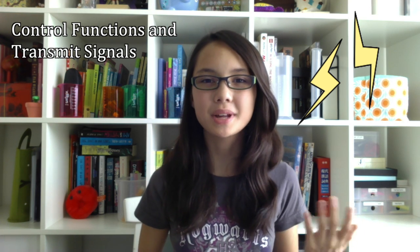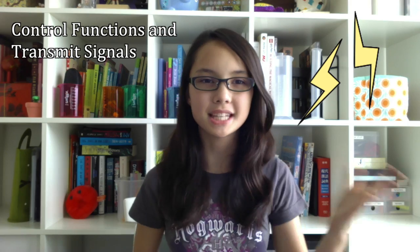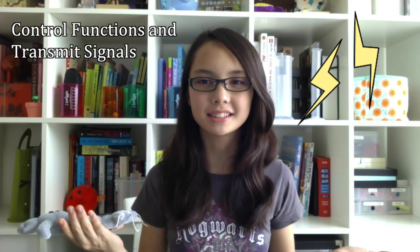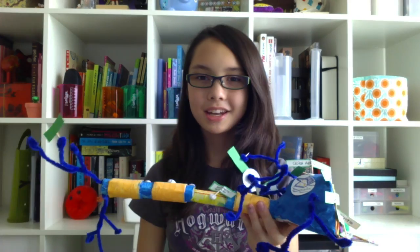The neuron is the cell responsible for transmitting information in our brains in the form of electrical signals. They control our body's functions and tell other cells what actions need to occur. They are specifically designed to receive and transmit signals to one another.